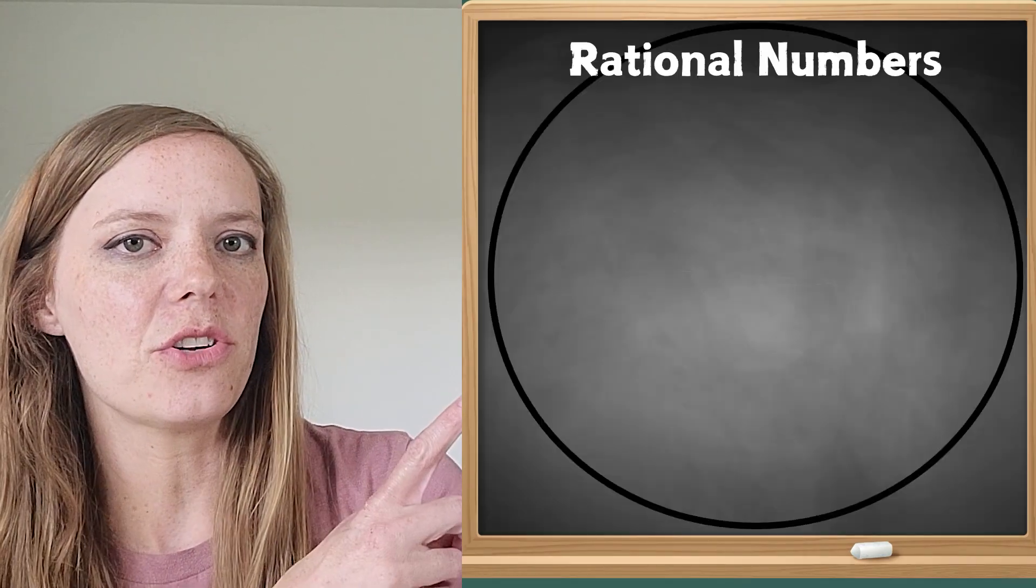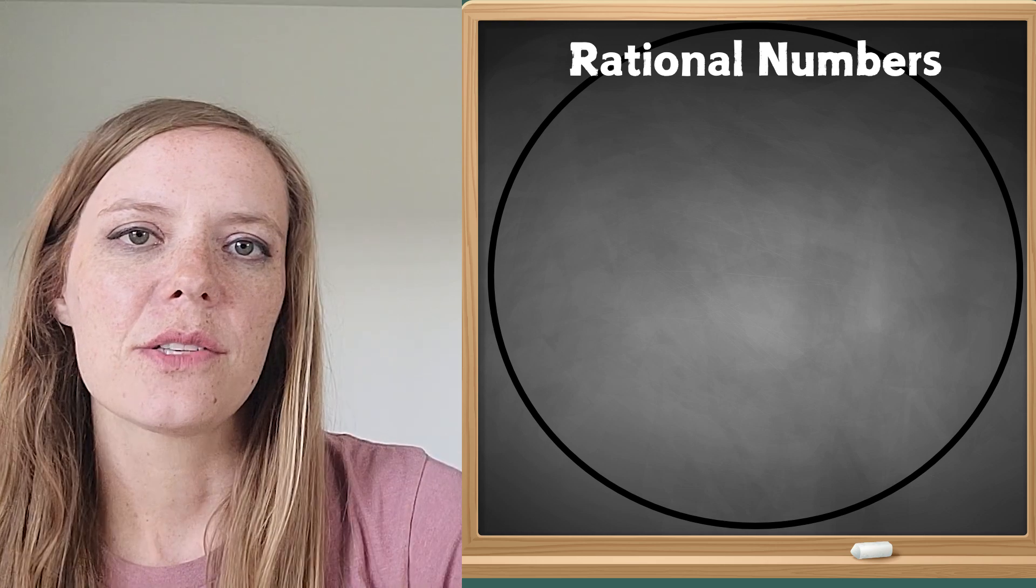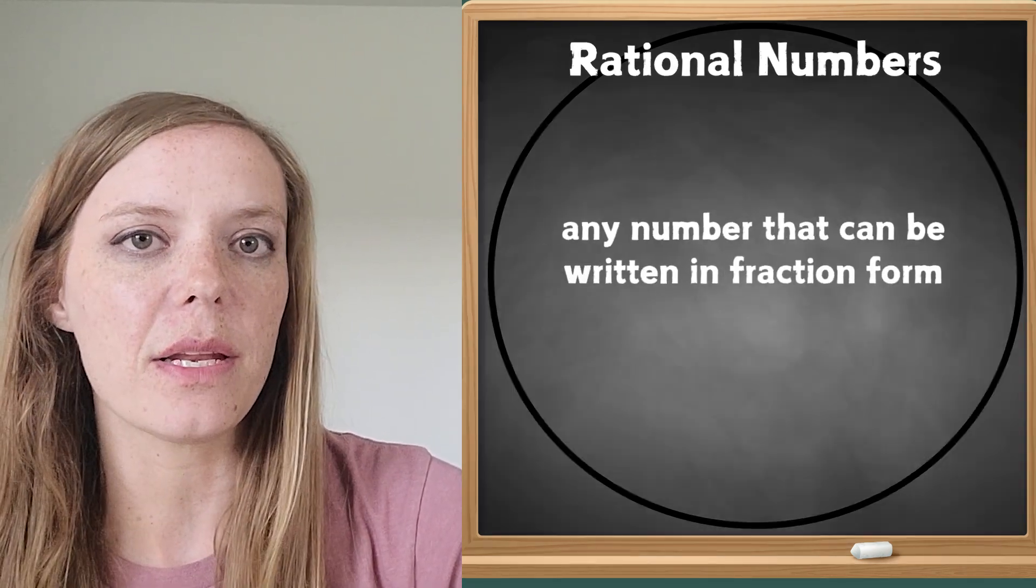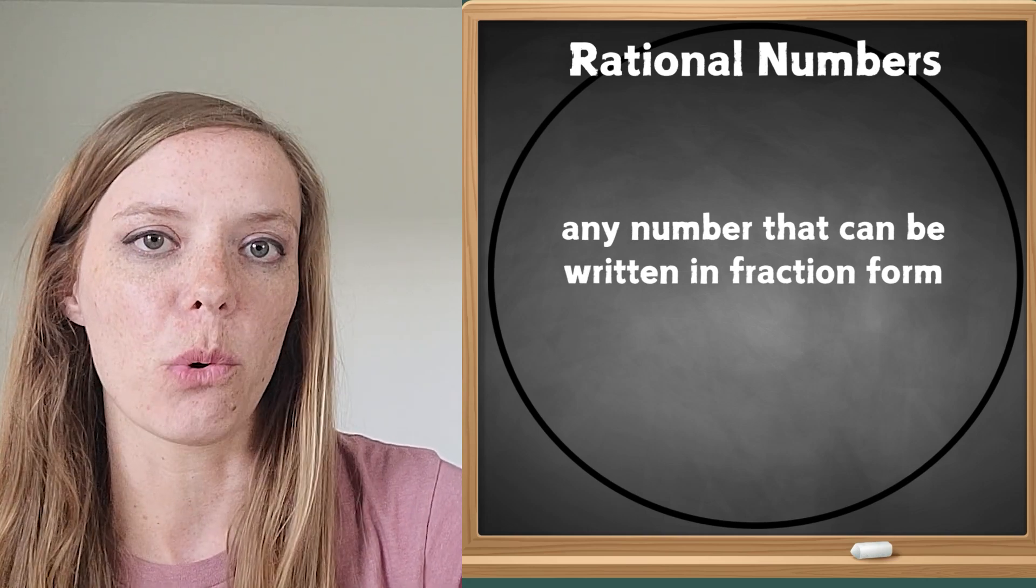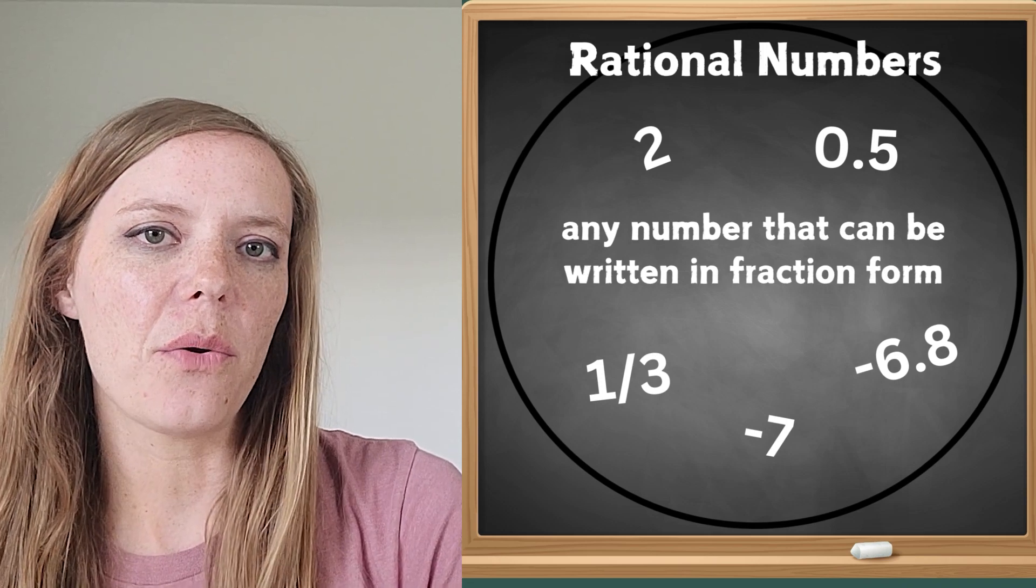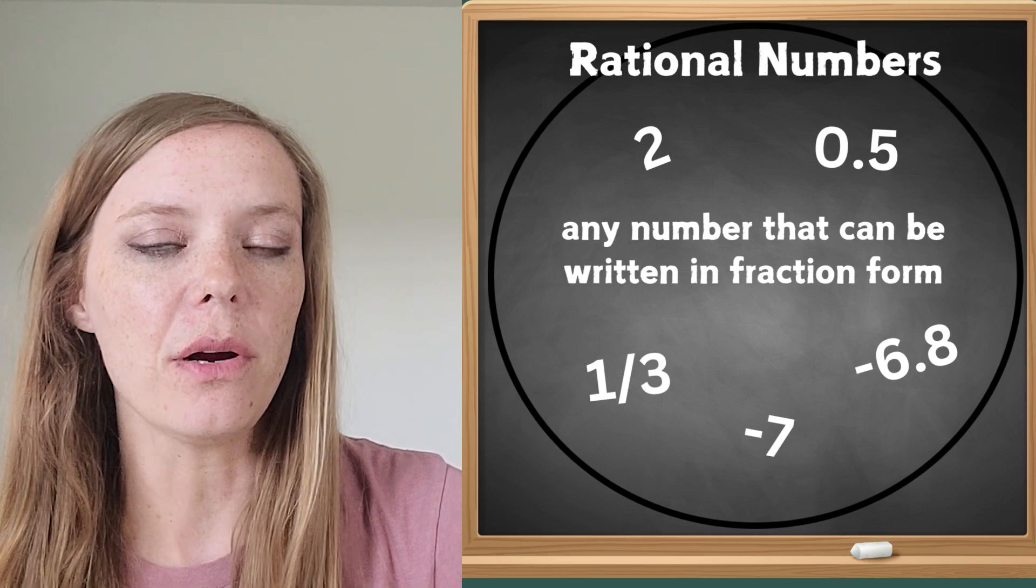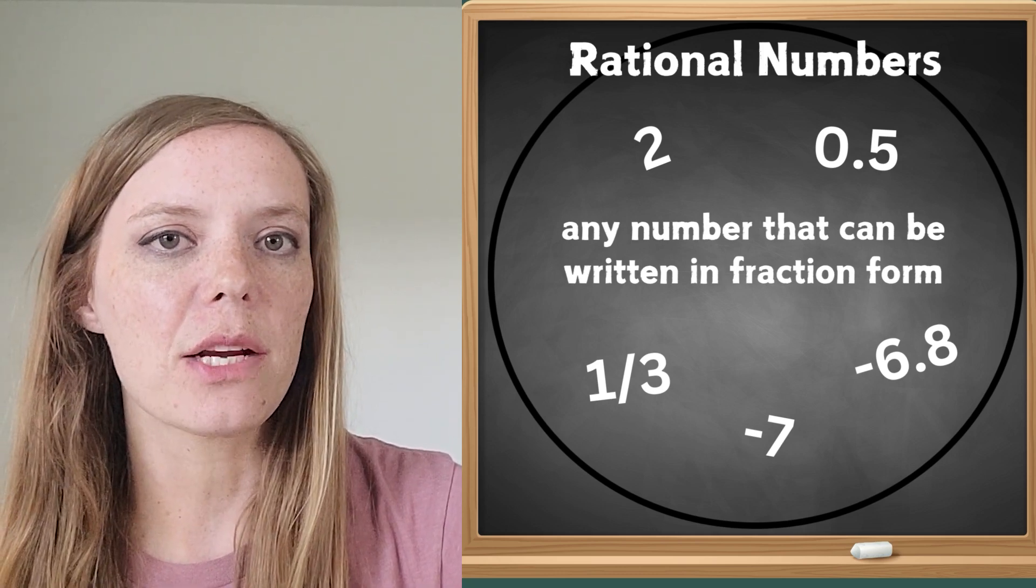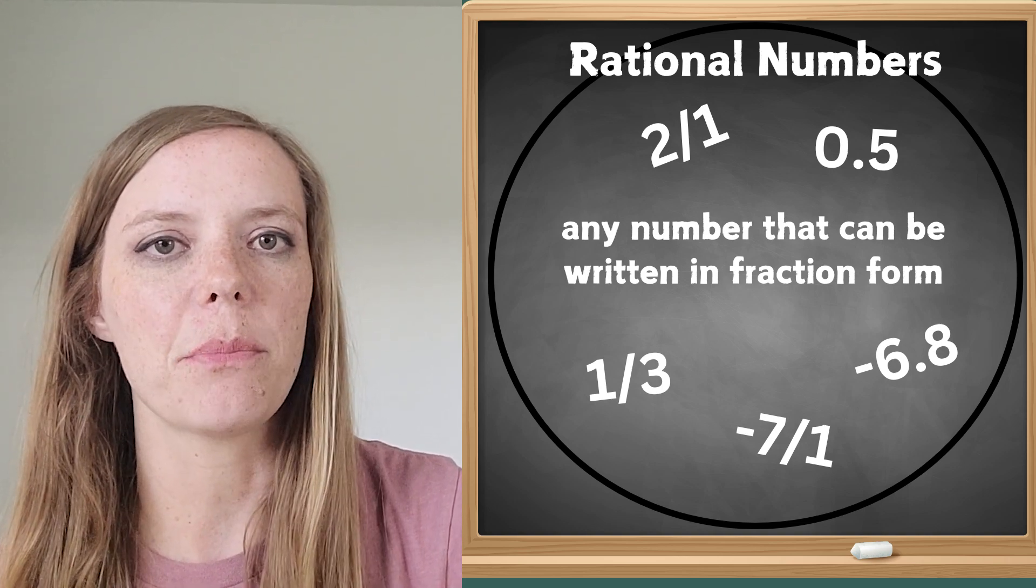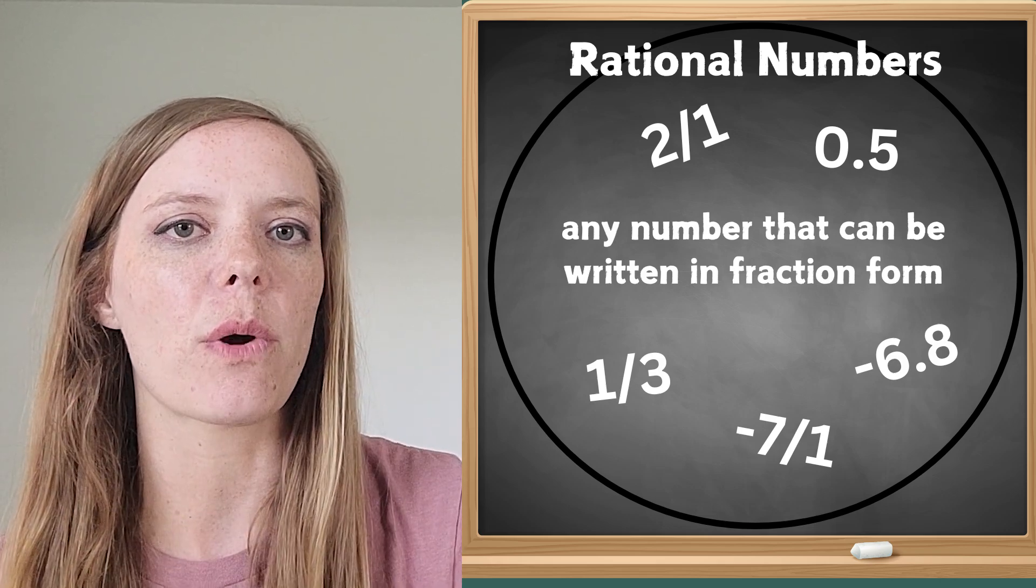My first lesson is about rational numbers and this graphic is going to help us learn about rational numbers. So the first thing we need to know is that a rational number is any number that can be written as a fraction or in fraction form. So here's some examples that can go inside this circle and you're going to notice some positives, some negatives in there. Some of these numbers are just a whole number but they can be written as a fraction over 1.